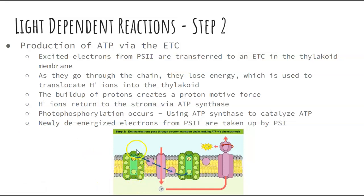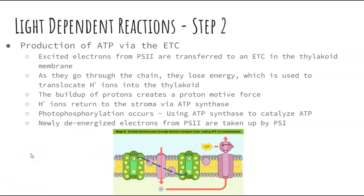PS2 is on the left-hand side of this picture, and its de-energized electrons get sent over to PS1. We have the proton motive force as hydrogen ions get pushed through this membrane. This is not wildly different from cellular respiration, but the pieces doing this process are different — we're using PS1 and PS2, terms we didn't use in cellular respiration, but the concept is the same.